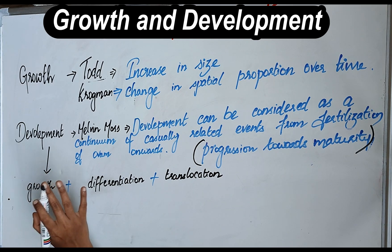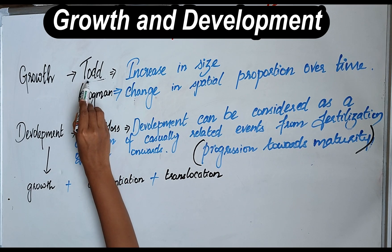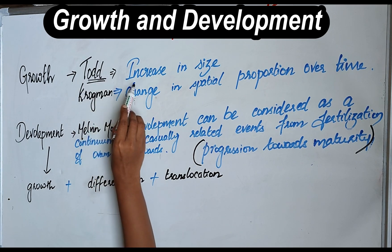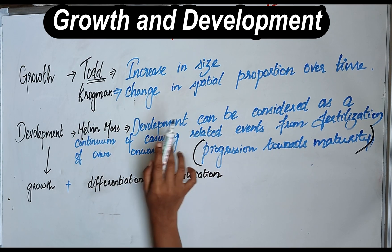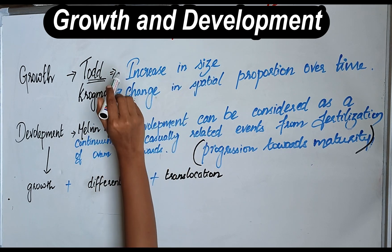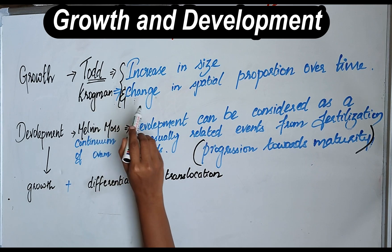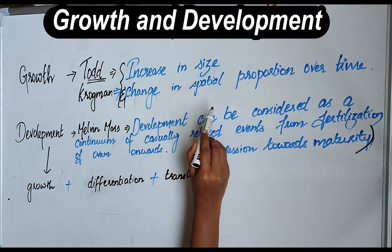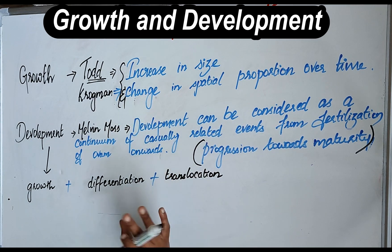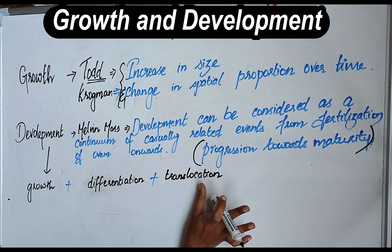Growth has been described in many terms, but the simple term described by Todd is increase in size, and later by Clarkman as change in spatial proportion over time. So there is a size increase and also there is a change in the proportion over time.